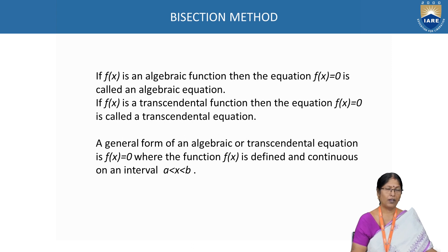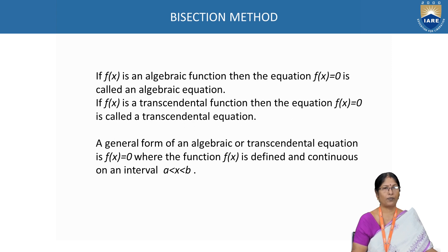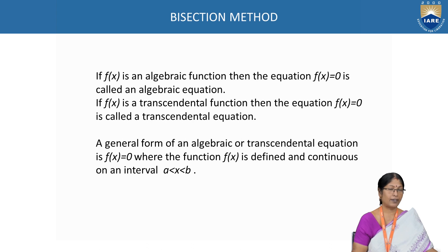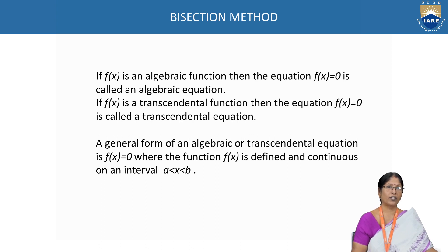That is, if f of x is an algebraic function, then f of x = 0 is called an algebraic equation; otherwise it is called a transcendental equation. The general form of an algebraic or transcendental equation is f of x = 0, where the function f of x is defined and continuous on the interval where x lies between a and b.